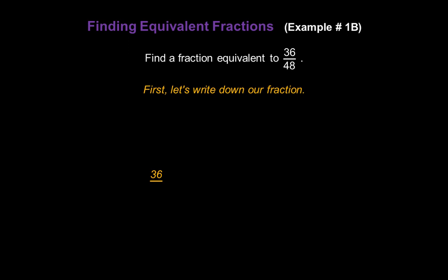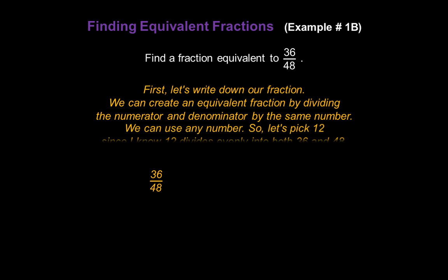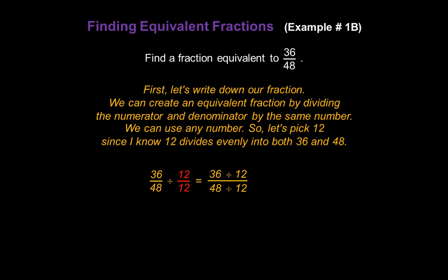Now let's find a fraction equivalent to thirty-six over forty-eight. We can create an equivalent fraction by dividing the numerator and denominator by the same number. I could use two or four, but I picked twelve, since I know twelve divides evenly into both thirty-six and forty-eight. So we'll divide top and bottom by twelve. Our new numerator will be thirty-six divided by twelve, and the denominator will be forty-eight divided by twelve. Thirty-six divided by twelve is three, and forty-eight divided by twelve is four. So three-fourths is a fraction equivalent to thirty-six over forty-eight.